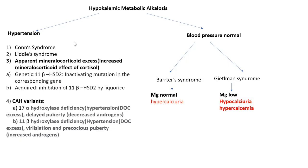If we have hypertension with hypokalemic metabolic alkalosis, the first diagnosis is Conn's syndrome or primary hyperaldosteronism, discussed in our previous lecture. The second in line is Liddle syndrome — also hypokalemic metabolic alkalosis along with hypertension. The third is the syndromes of apparent mineralocorticoid excess, which we'll discuss in detail in subsequent slides.